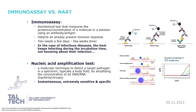So first, what's an immunoassay? An immunoassay is a biochemical test that measures the presence or the concentration of a certain molecule in a solution by using an antibody-antigen reaction. And that's something that you definitely need to remember. So when you buy a Covid test in the pharmacy — I hope this will become irrelevant in a few years — then most of the time you buy this type of test.